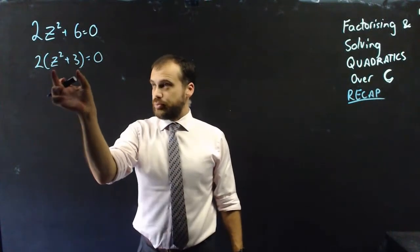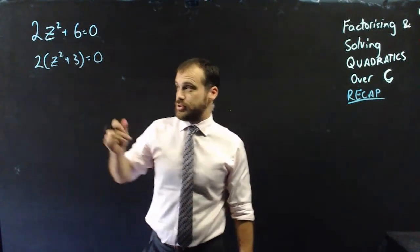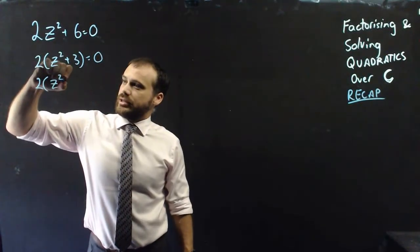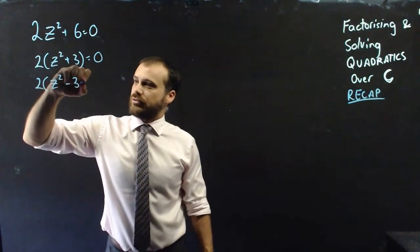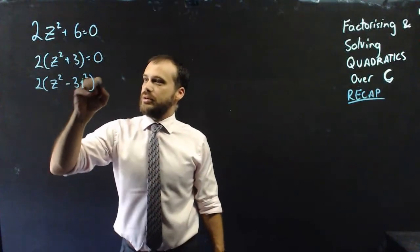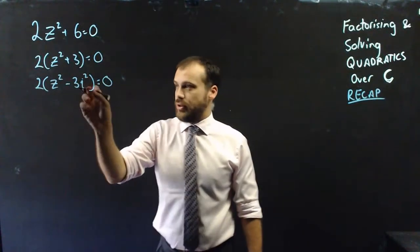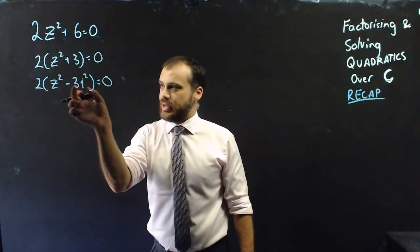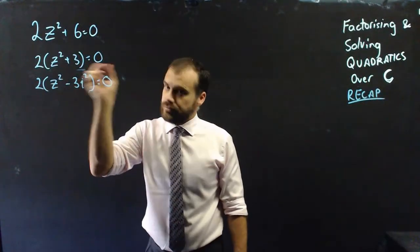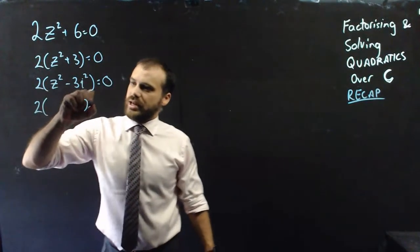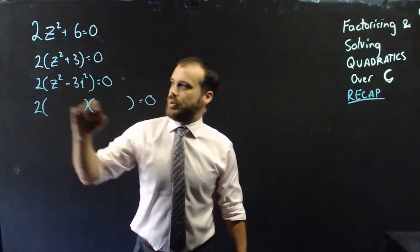And now I can express that as a difference of two squares as well, because I can express it as -3i². i² is negative 1, which would make that negative 3, but then it's a negative there, which makes it positive 3. And I can then express that as a difference of two squares.